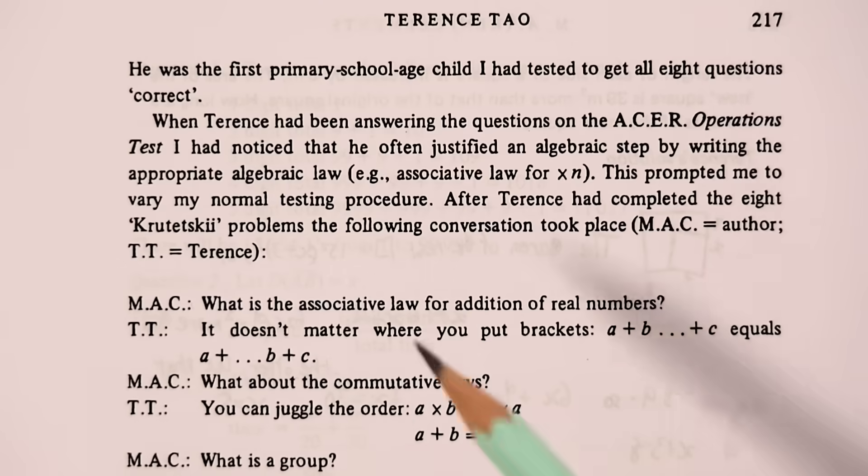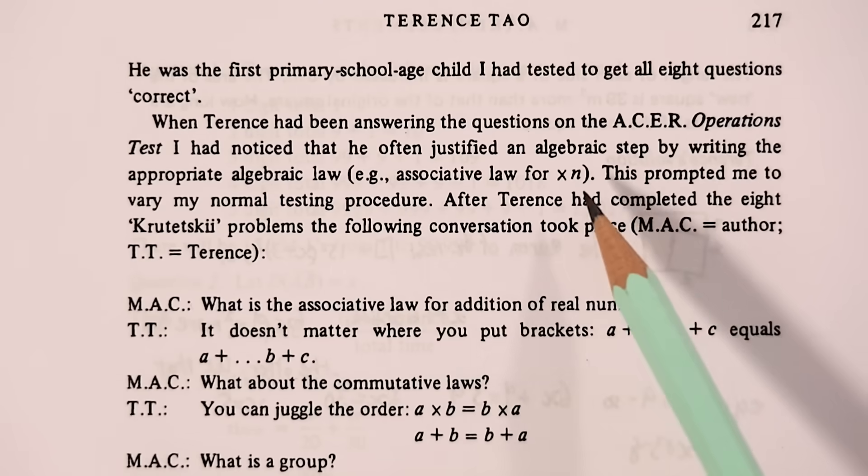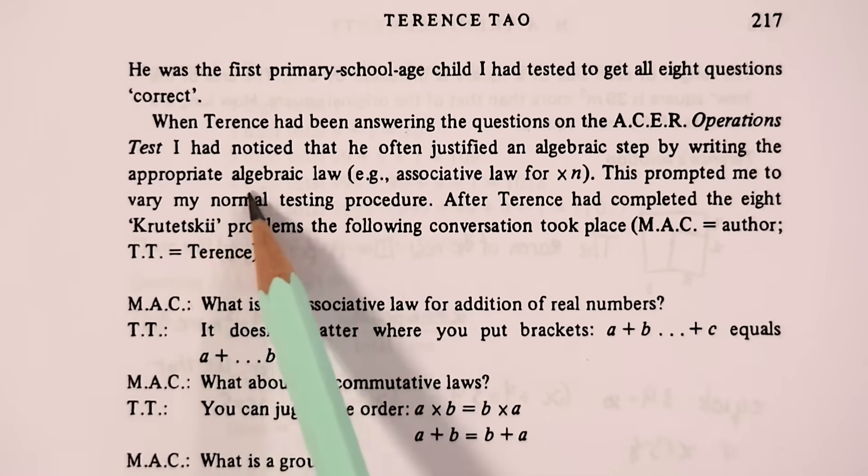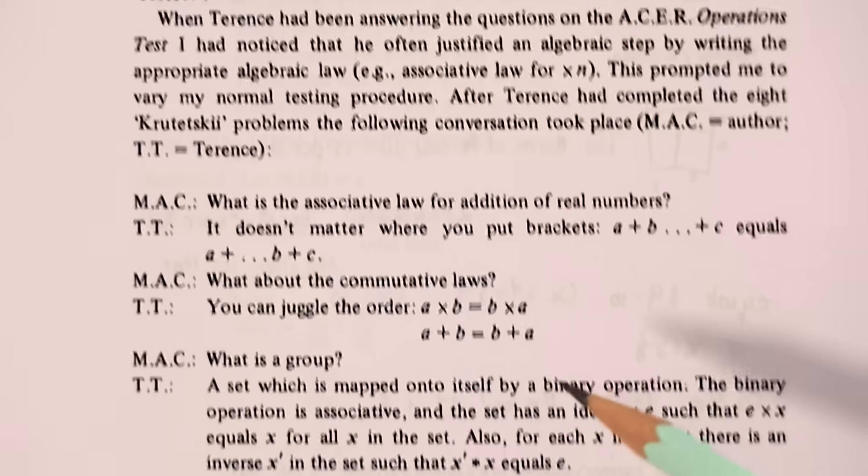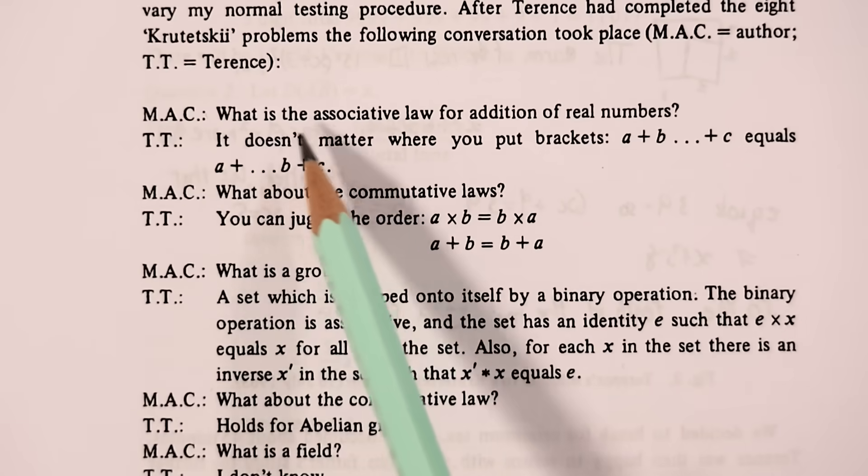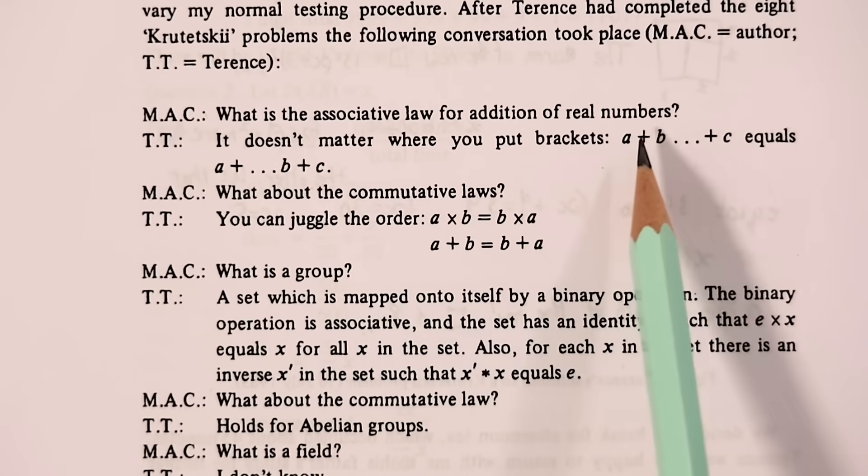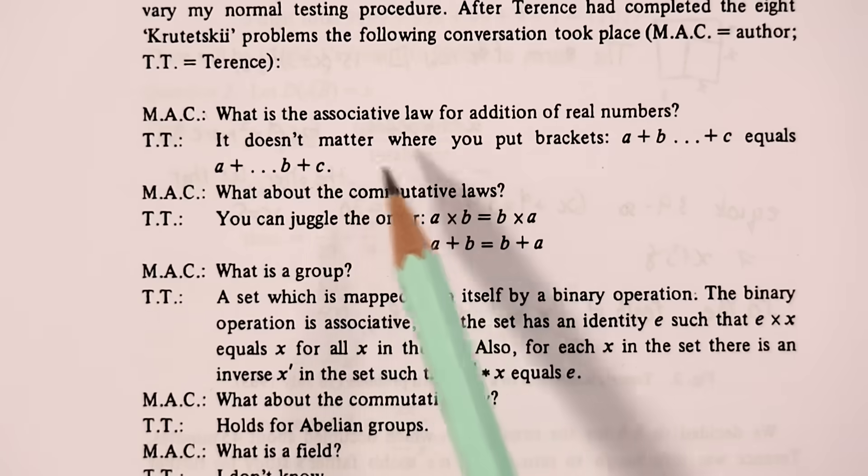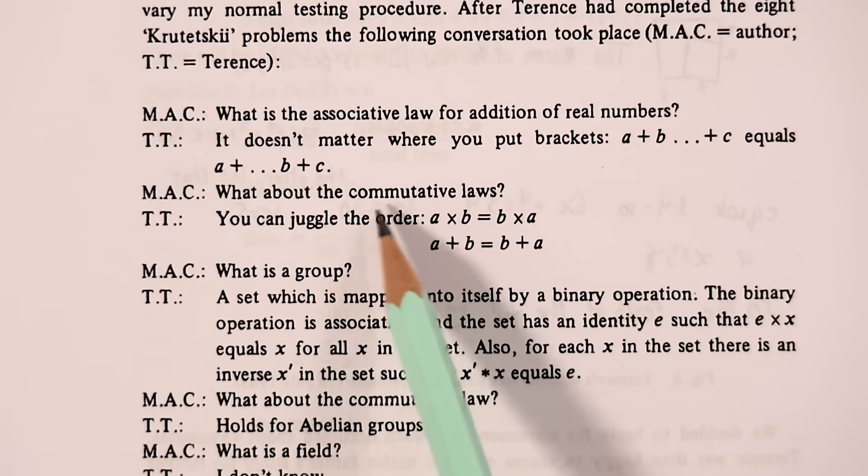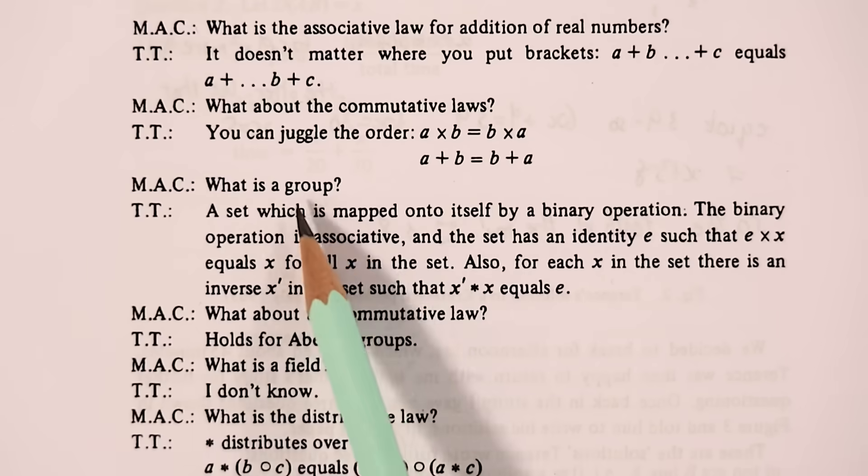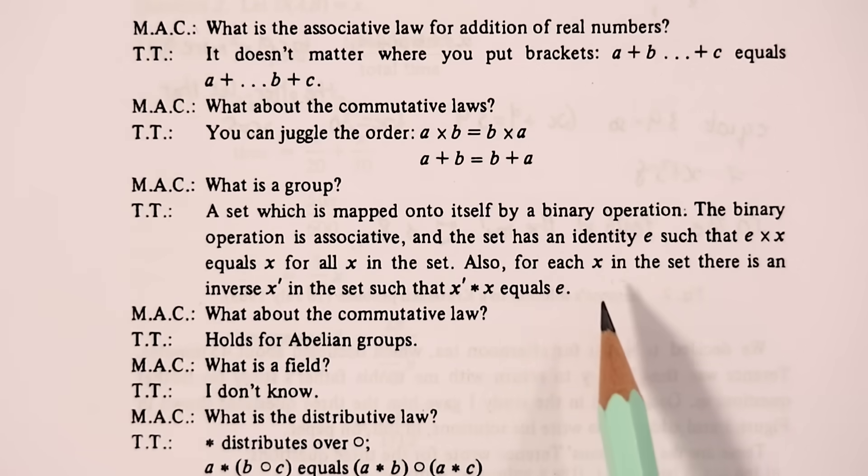Clements noticed that while Terence had been solving the questions, he often justified an algebraic step by writing the appropriate algebraic law, for example, the associative law next to it. And so that prompted this following very interesting conversation. Clements asks, what is the associative law for addition of real numbers? Terence answers that it doesn't matter where you put the brackets. He also gives a correct definition of the commutative laws. And he also gives a correct definition of a group, something that most math students don't encounter until university.